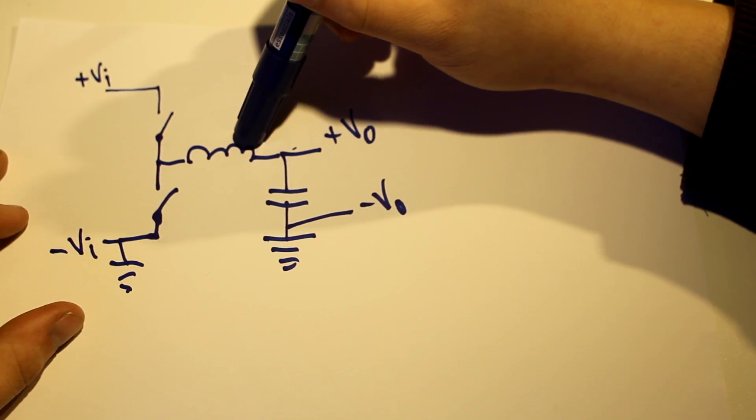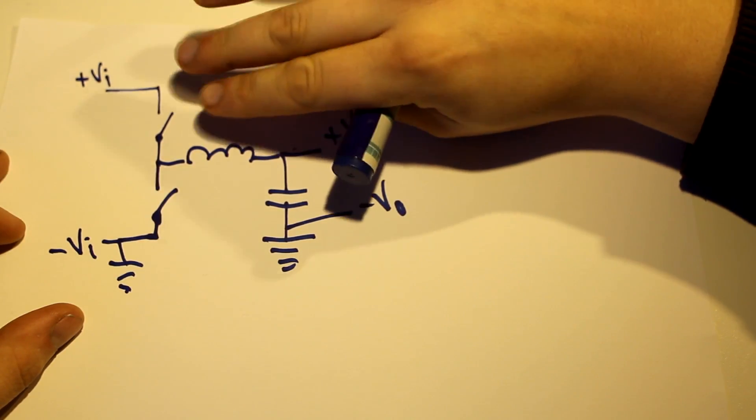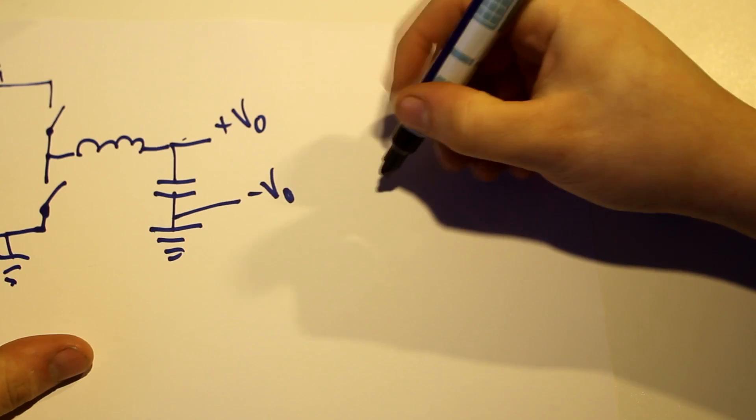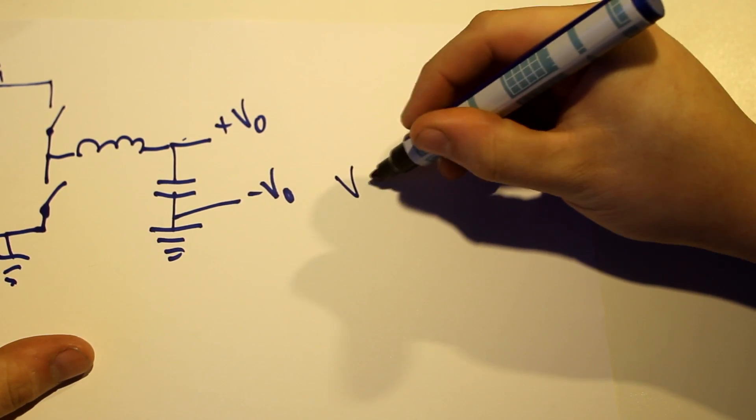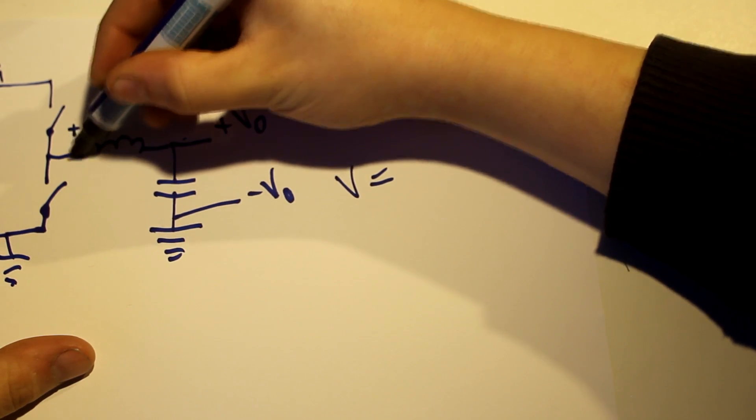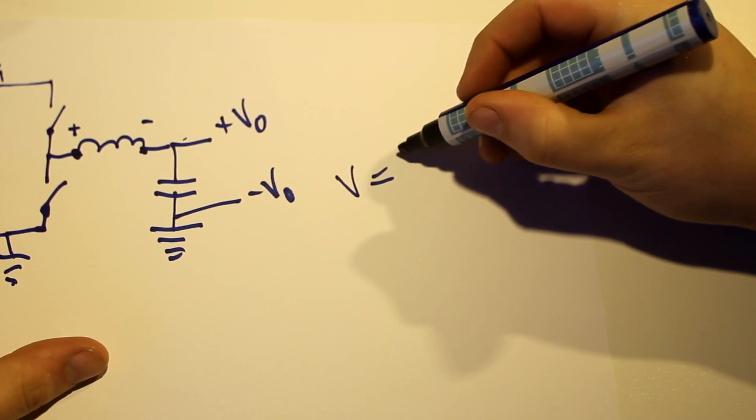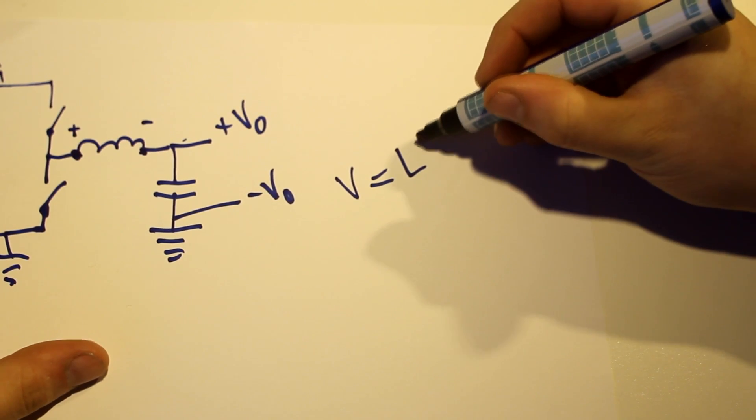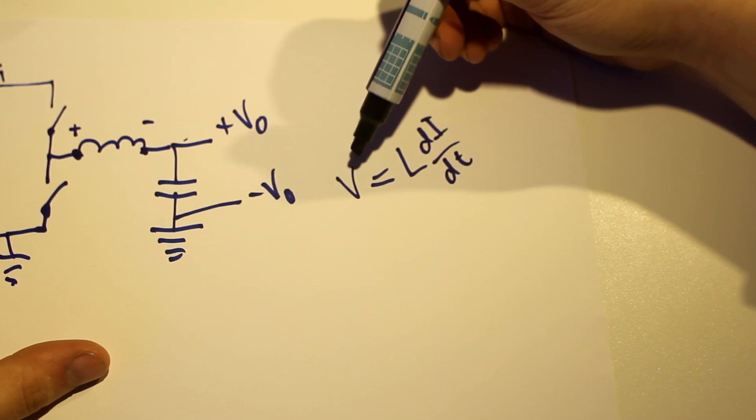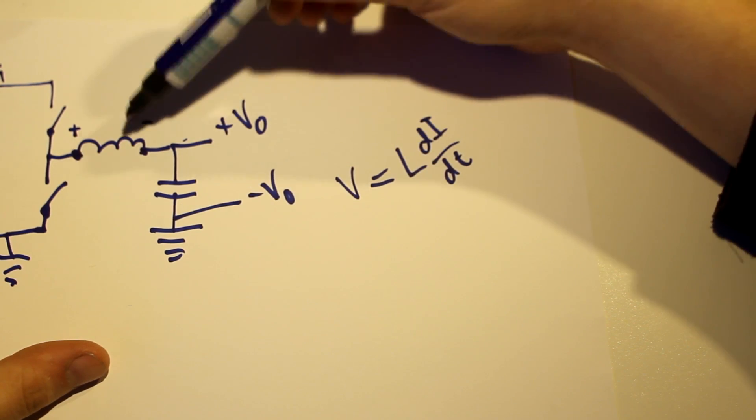What makes an inductor so magical is that the inductor has this special characteristic, which you can express as the voltage over the inductor. So if we just regard this inductor, say this is the positive side, this is the negative side. The voltage over the inductor is equal to L di dt. The voltage is equal to the inductance value, which is a constant specific to each inductor, times the change of current over time.